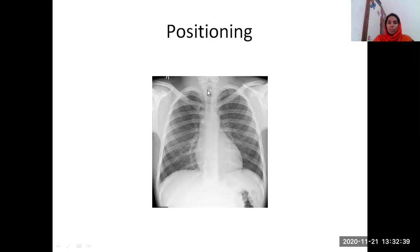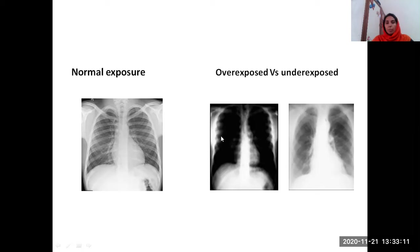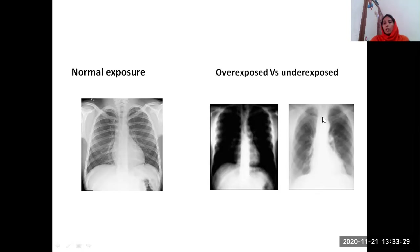We need to say about the exposure — whether it is normally exposed, underexposed, or overexposed. In a normally exposed film, the vertebral bodies are seen through the cardiac shadow and we can count the number of vertebrae. In an overexposed film, the lungs appear darker and the cardiac shadow also appears lighter. In an underexposed film, we cannot count the vertebrae through the cardiac shadow or even in the upper area, and the lung fields appear hazy.